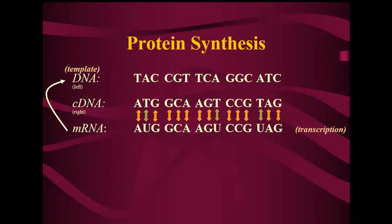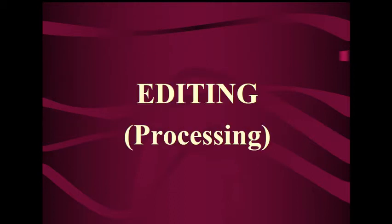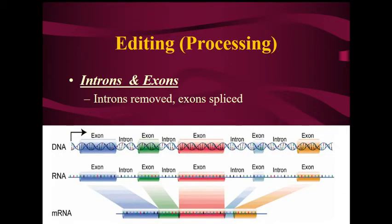mRNA would break off of the DNA and the DNA would close back up as if nothing had happened. We would then have our pre-mRNA, or primary RNA transcript. The next thing that happens before the mRNA can leave the nucleus is the processing or editing process — this is when introns are removed and exons are spliced together. Our pre-mRNA has been processed, and we now have mRNA that is ready to leave the nucleus.